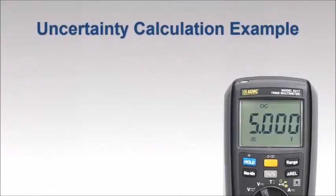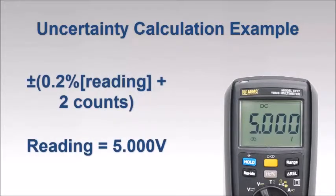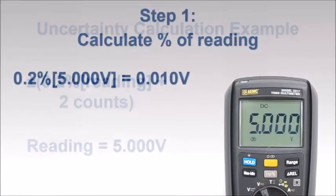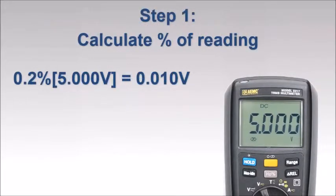Now let's apply what we've learned. We've hooked up a 6,000 count multimeter to a battery. This instrument features an uncertainty specification of plus or minus 0.2% of the reading plus 2 counts, when measuring DC voltage. With the range at the lowest setting, we get a reading of 5.000 volts. We start by deriving 0.2% of the reading, or approximately 0.01 volt.